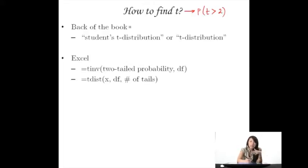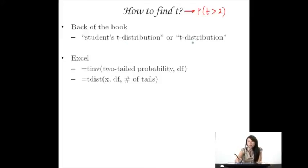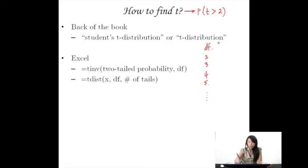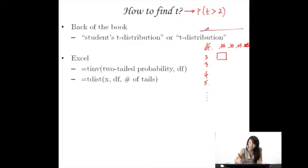One thing you could do is look at the back of your book. Usually in the appendix section there's something called the t-distribution or the Student's t-distribution. And oftentimes it'll have degrees of freedom on one side — like 2, 3, 4, 5, all the way down. And then it'll show you either a one-tailed or two-tailed area, like at .25, .10, .05, .025. So it might give you these areas.